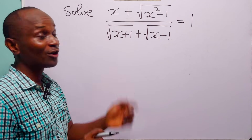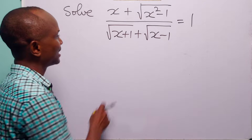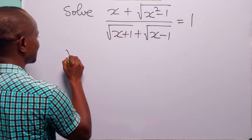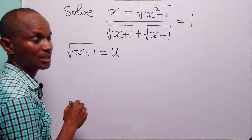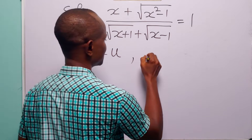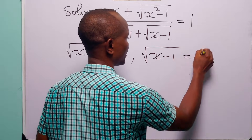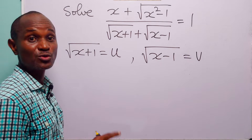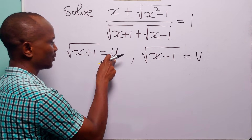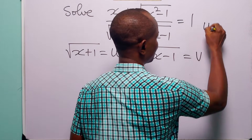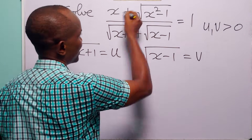Hello and welcome. To solve this equation, let us start with a very simple substitution. Let us call the quantity square root of x plus 1 as u, and the square root of x minus 1 as v. Of course, the square root of a real number must be positive, so both u and v must be greater than zero.